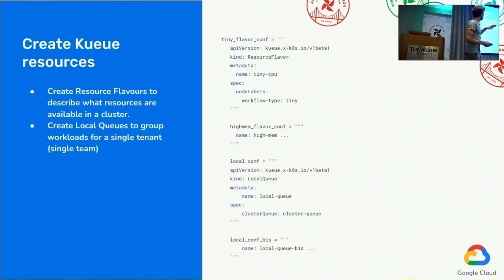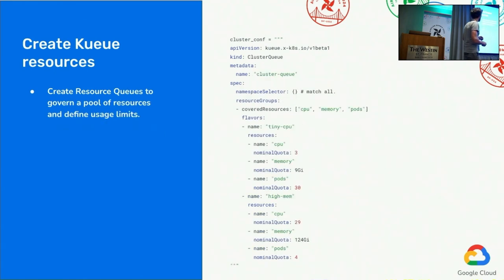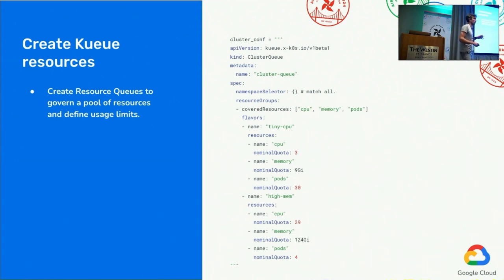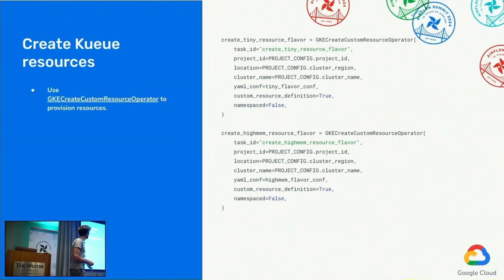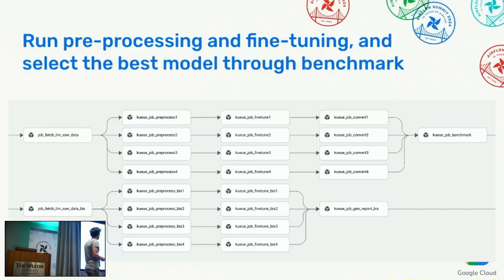Now the resource flavors: we have one tiny resource flavor and one high-memory resource flavor, which describe different machines in the cluster. We also create two local queues to simulate two different teams competing for resources. The most important abstraction is the cluster queue, which maps the flavors to quotas controlled by Kueue. Here we have quotas for CPU, memory, and pods — you can define different quotas for machine types — and we create both tiny CPU and high-memory flavors using the GKE create custom resource operator.